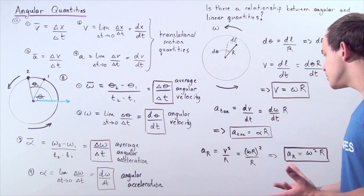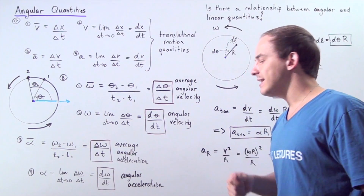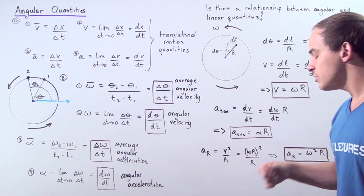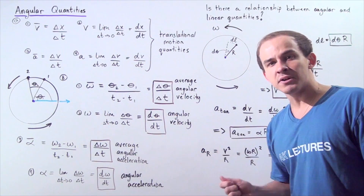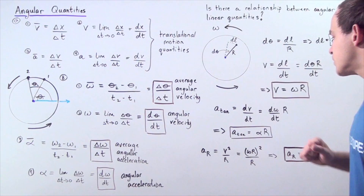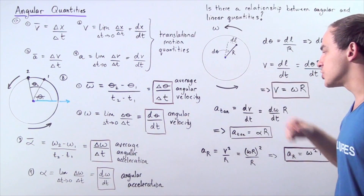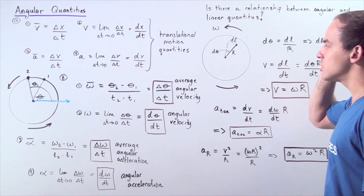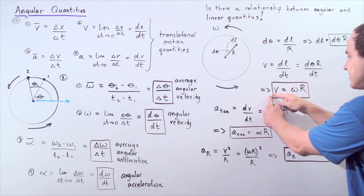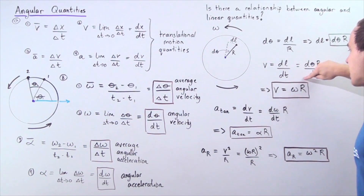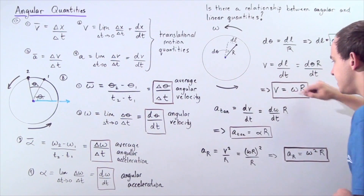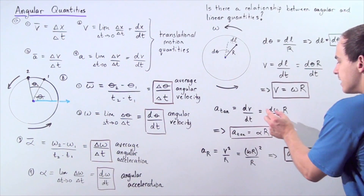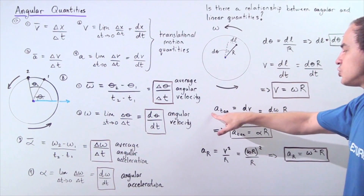Let's build a relationship between alpha — our instantaneous angular acceleration — and the instantaneous tangential acceleration, as well as between radial or centripetal acceleration and angular quantities. Tangential acceleration is the derivative of the instantaneous velocity function with respect to time. Since velocity equals omega times R, we substitute and, because R is a constant, we get: d omega over dt times R equals tangential acceleration.